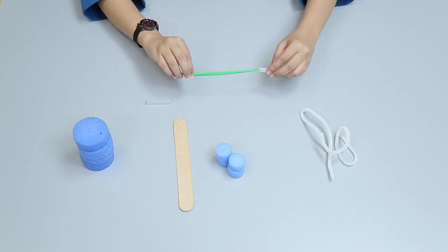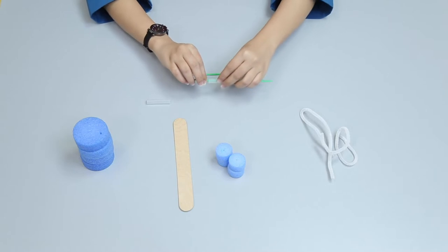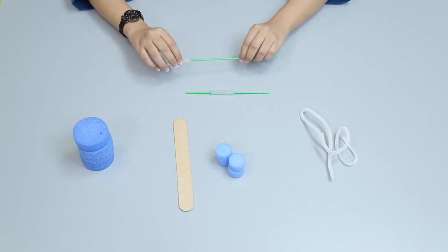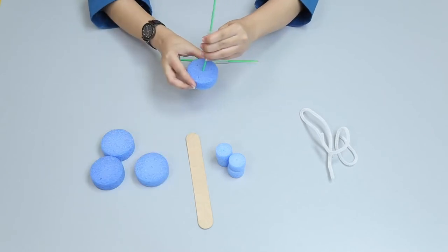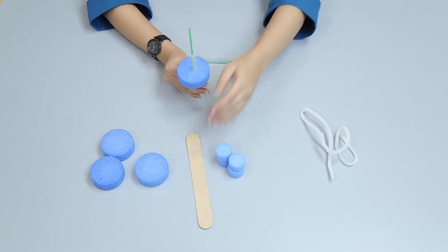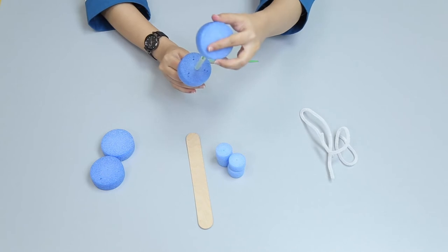Attach two big foam wheels on both sides of the plastic sticks to make the car wheel.